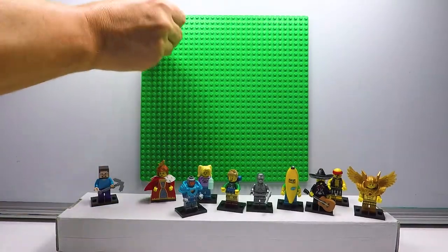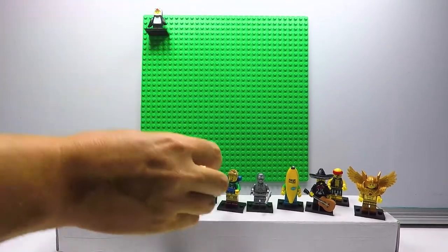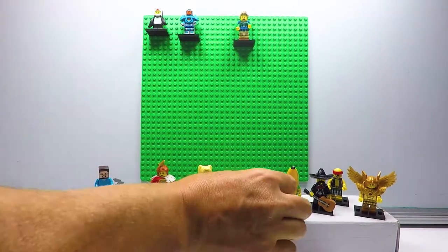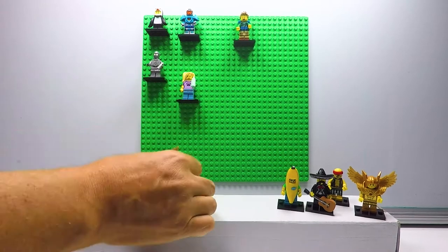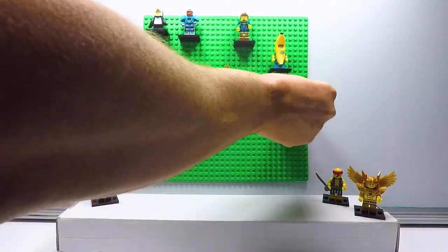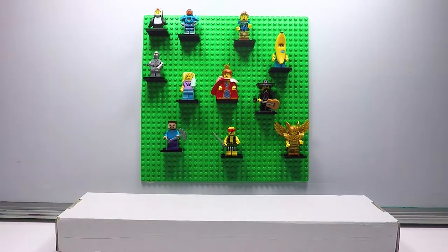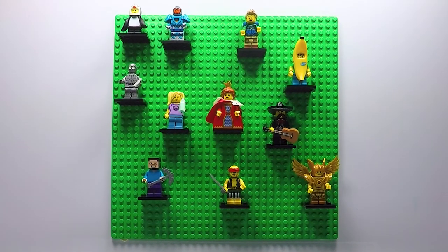Then, the minifigures with their display stands would just sit nicely in between the studs. Put them on the board however you want, and there, your own improved Lego minifigure display.